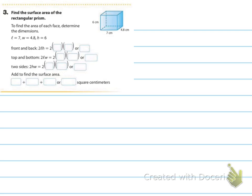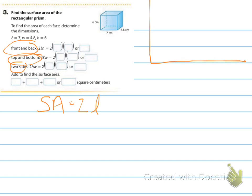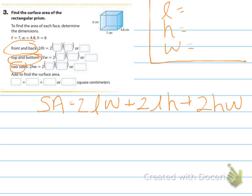So go ahead and do that with number three. They've given you each of the pieces — figuring out what the front and back is, the top and bottom, and the two sides. What I'd like you to do is make a key like I just did, and then use the surface area formula, which is 2 times length times width, plus 2 times length times height, plus 2 times height times width, and then substitute each one in after you've identified your length, width, and height.